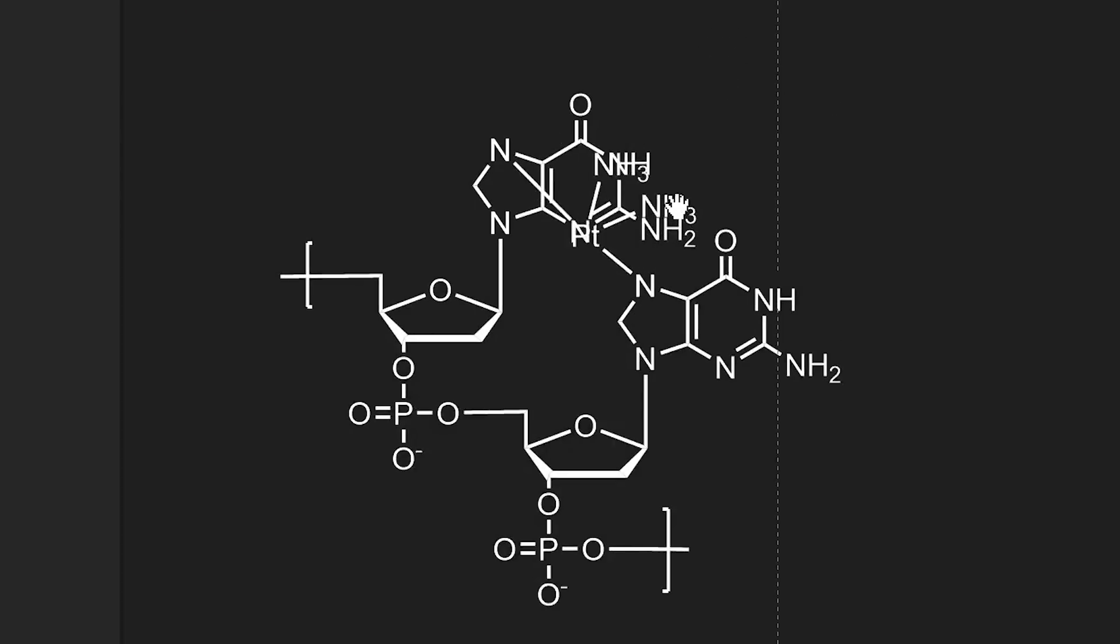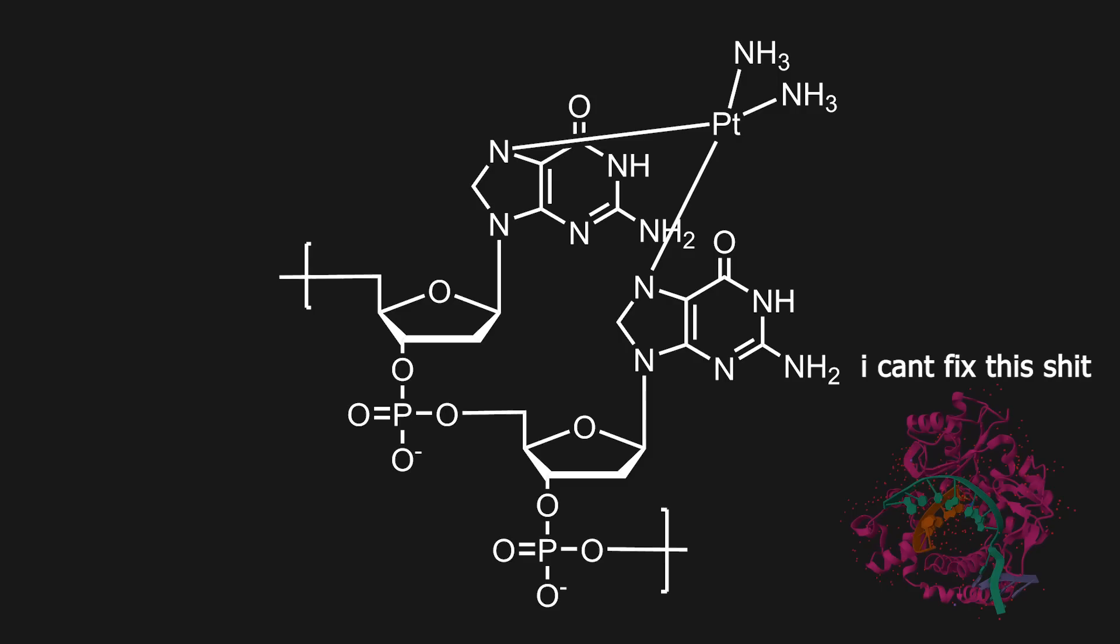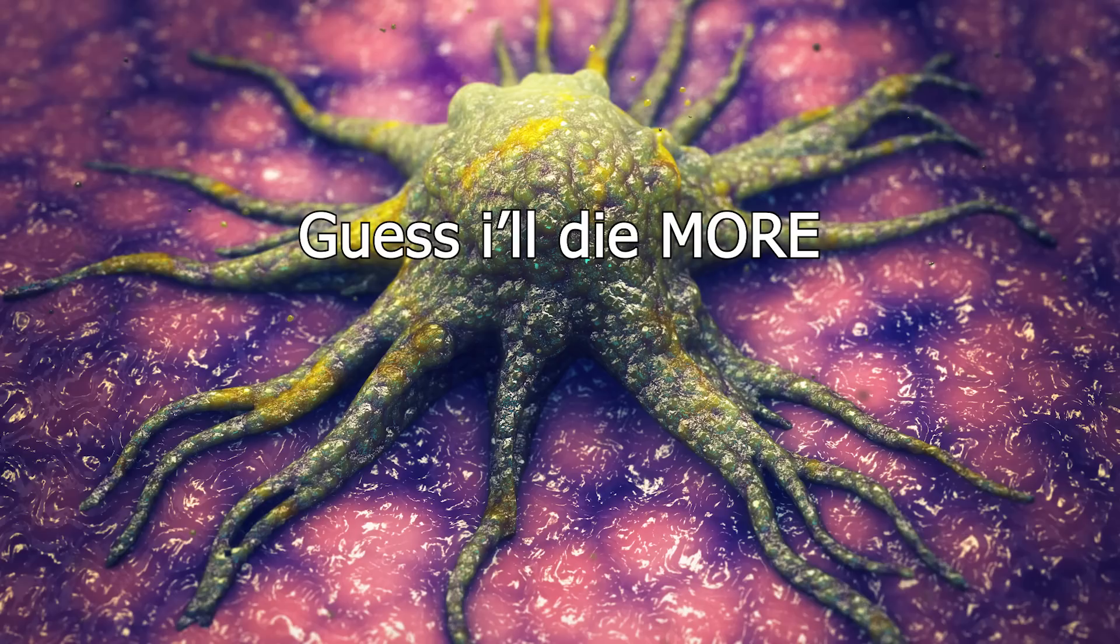In a much more elegant way than this 2D drawing. This crosslink stops the DNA repair enzymes from repairing the mistake and also prevents the synthesis of new DNA. This will cause the cell to undergo programmed cell death. Since cancer cells divide more than healthy cells, they are more affected, and thus it will kill more cancer cells than the healthy cells.